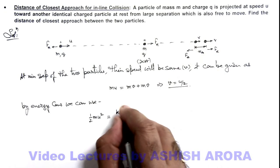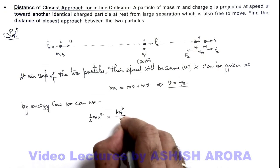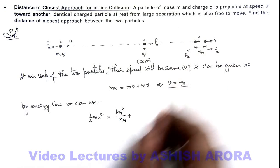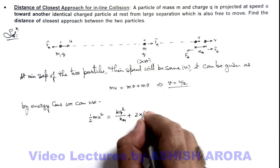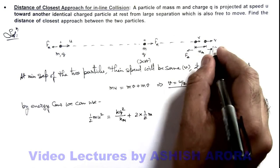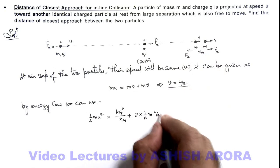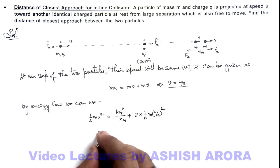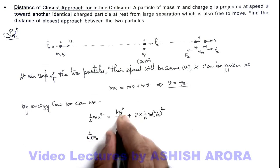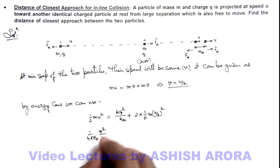The potential energy is given as kq²/x_m, plus both of these particles having kinetic energy. This is twice of (1/2)mv², which I can take as u/2. This is (1/4πε₀)(q²/x_m).